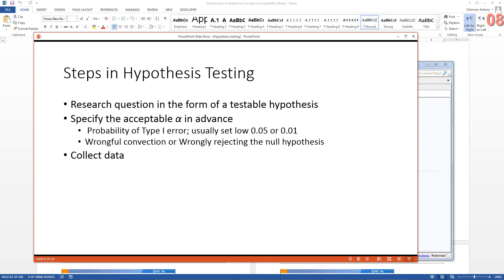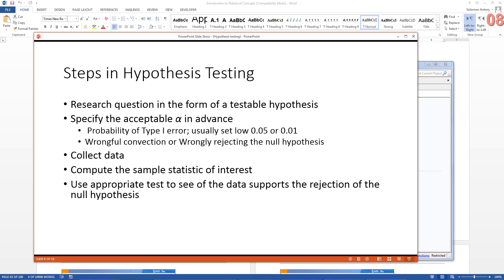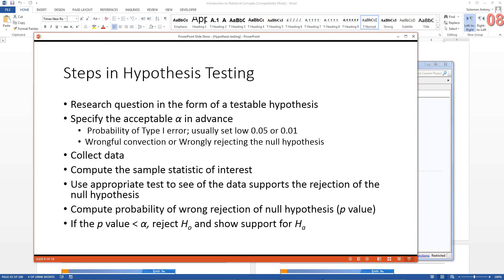Then we go ahead and collect data and then we compute sample statistics of interest. Then we use appropriate tests to see if the data supports the rejection of null hypothesis. The test we'll be using is something called t-test, and I'll go over that in a little bit. Then we compute what's called the p-value, which is the probability of wrong rejection of null hypothesis. Once you have the p-value, then you can compare. If the p-value is less than alpha, then we reject the null hypothesis, and if it is not, then we show support for alternative hypothesis.